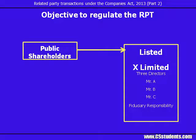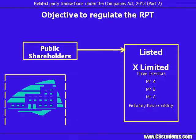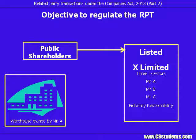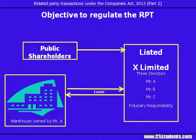But there is a likely chance that the directors approve some transaction on behalf of the company where they themselves are interested or getting a benefit. For example, one of the directors, Mr A, is the owner of a warehouse building. And now, X Limited proposes to take that warehouse building on lease to store its finished goods stock. In this scenario, X Limited is entering into a transaction with one of its directors, so it becomes a related party transaction.